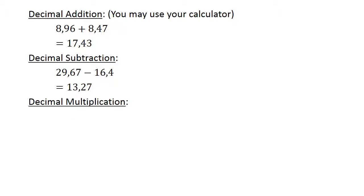Decimal multiplication: 0.65 times 0.15 equals 0.0975.